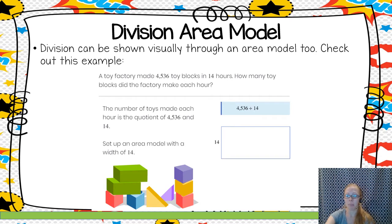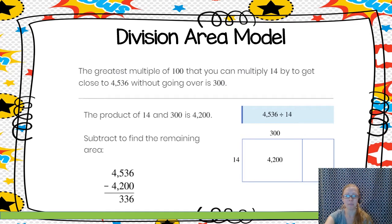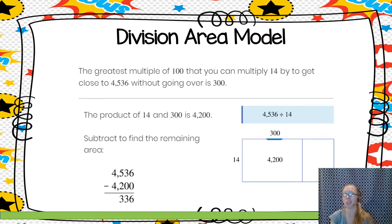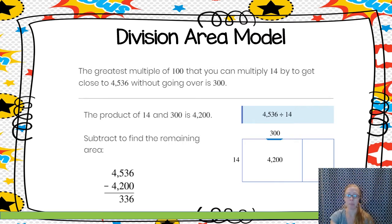When setting up an area model, we put our divisor on the left-hand side. Our first step is to think: 14 times what multiple of 100 is going to get me close to 4,536 without going over? Just like when we divided with the algorithm, we guessed 3 for the first digit — here it's about 300. So we multiply 14 times 300 to get 4,200. That goes inside our box, getting me close to 4,536.